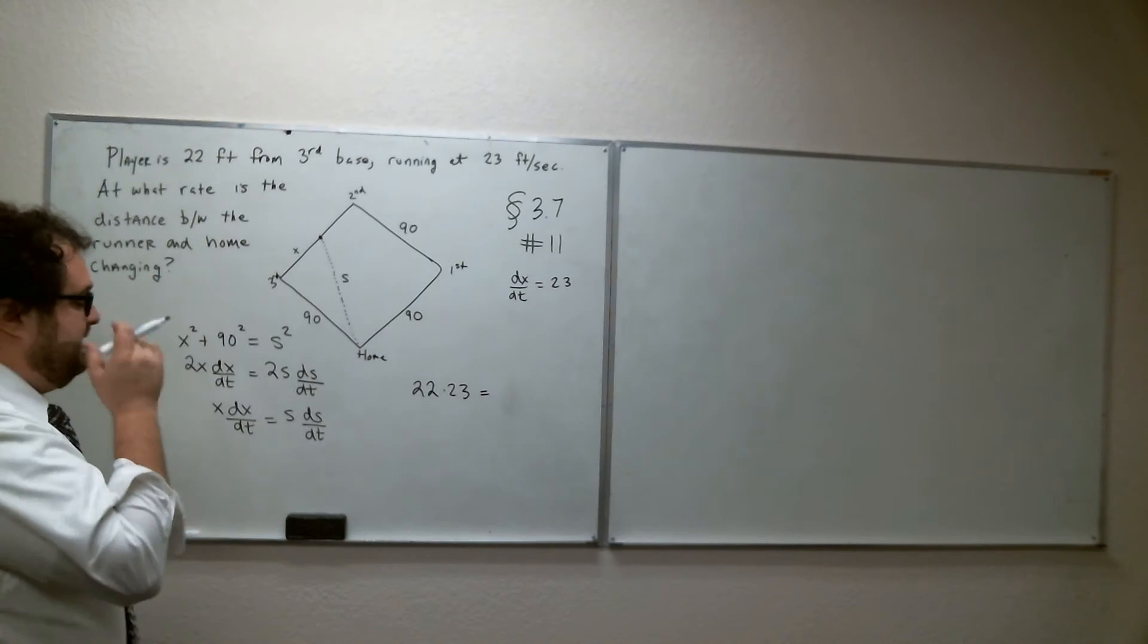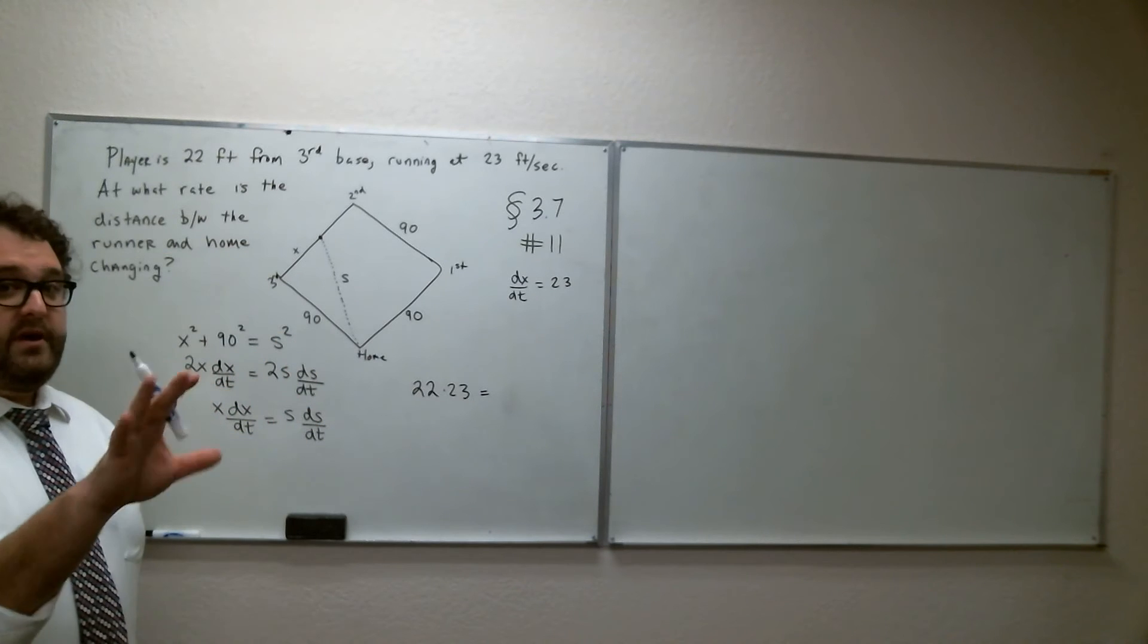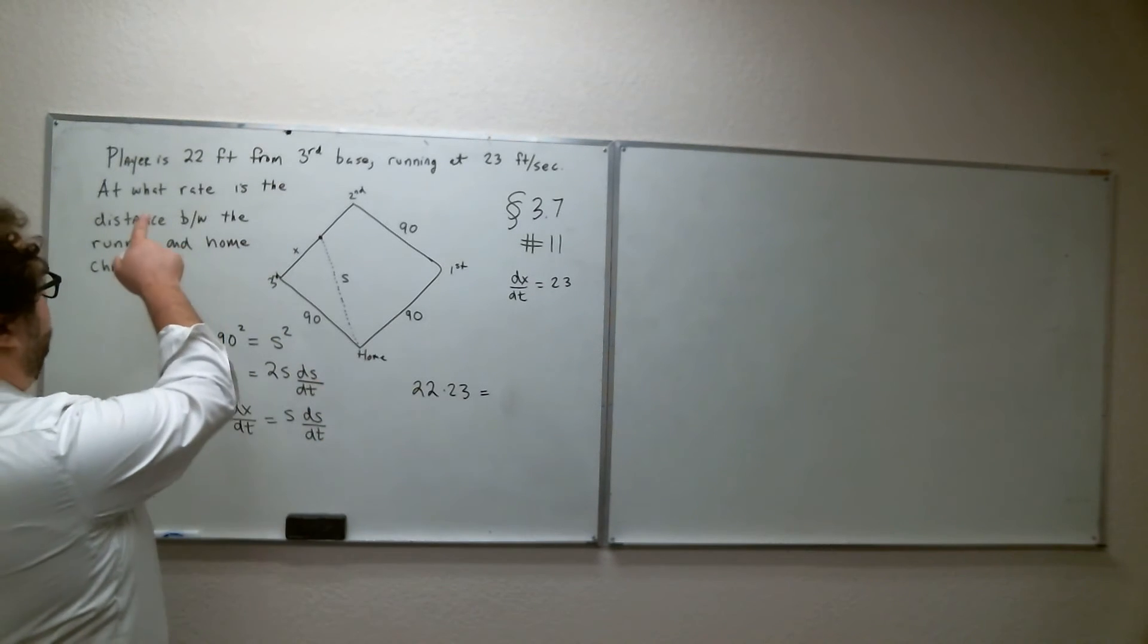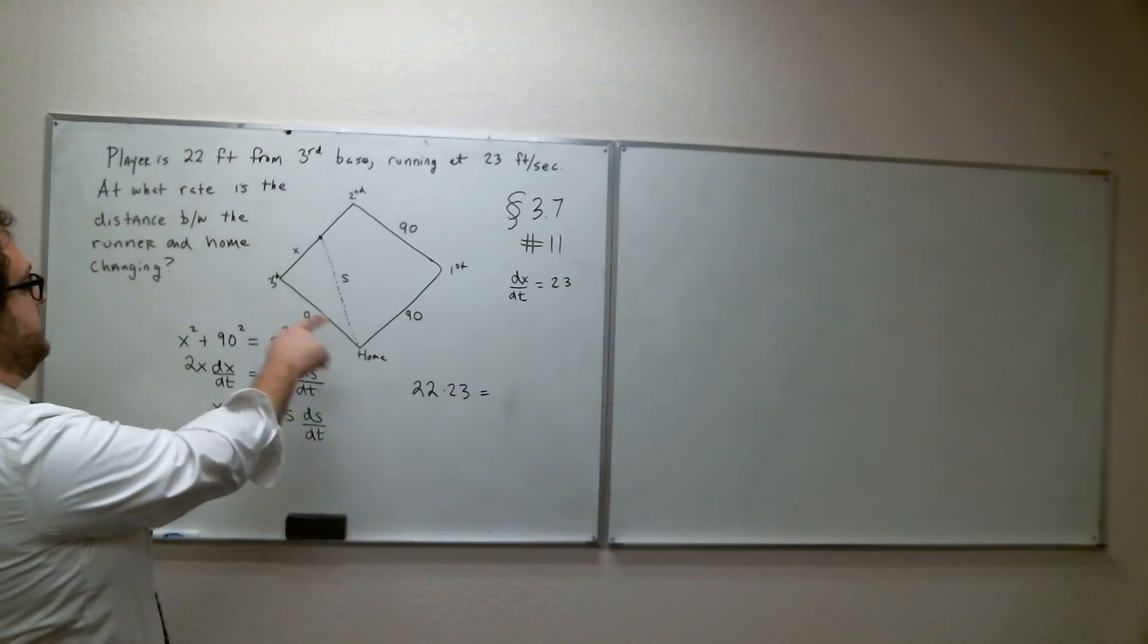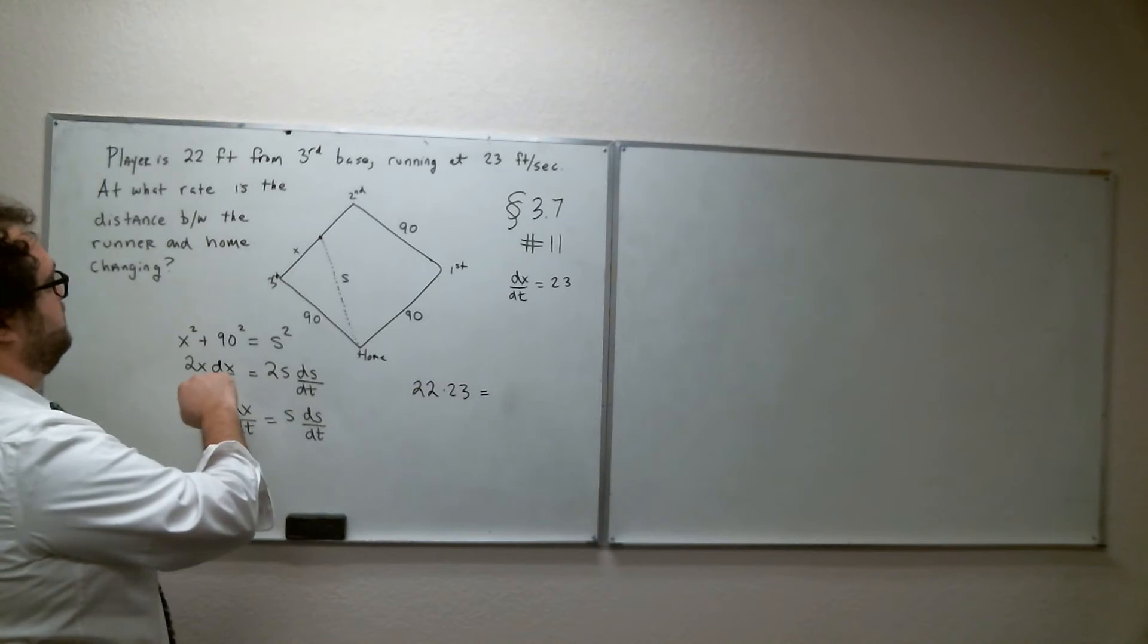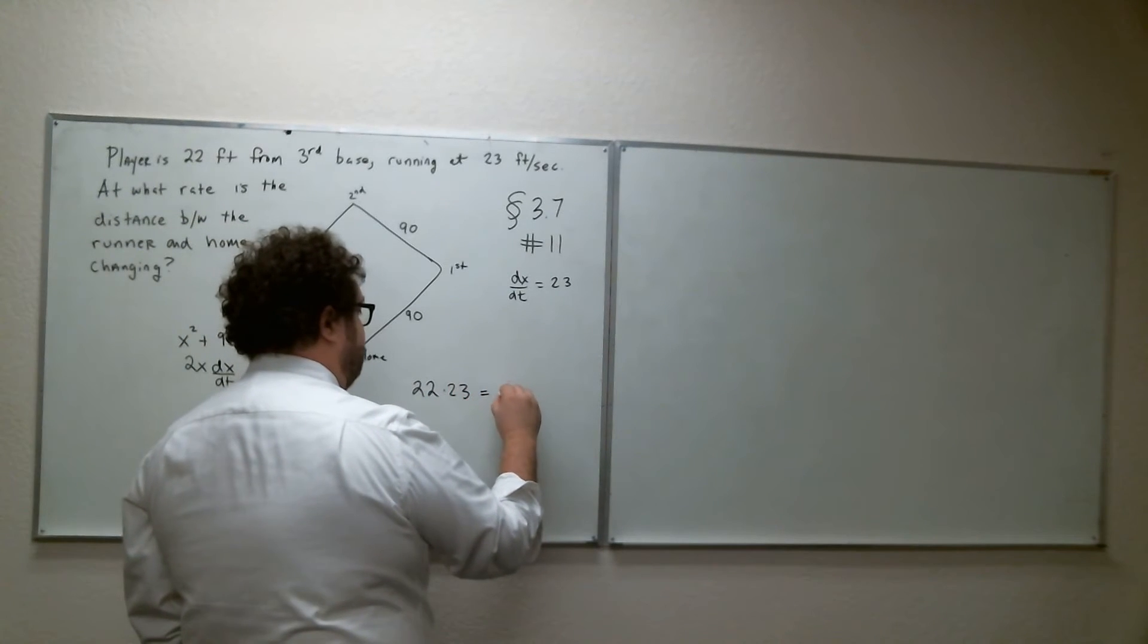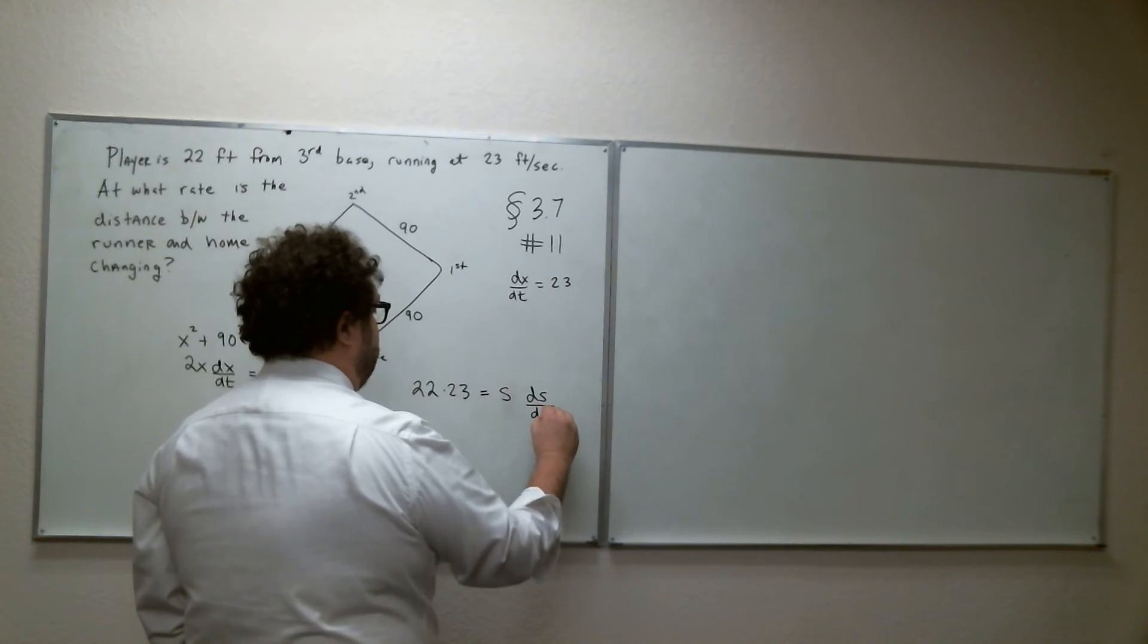Do we know what S is? Currently, no. We've used up all the information we've been given, at least the initial information. 22 feet from third base. Actually, we haven't used that yet. Oh, sorry. Yeah, we have X at 22. 23 feet per second. Now, S and DS/DT are left over.